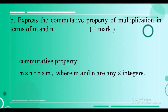The next question: express the commutative property of multiplication in terms of m and n. Commutative property means when you multiply any two numbers in any order, the product does not change. Considering m and n as any two integers, we write the commutative property as m into n is equal to n into m, meaning when you change the order, the answer does not change.